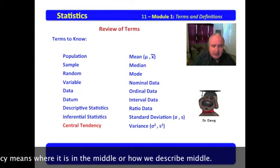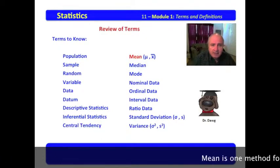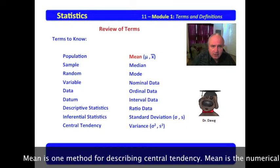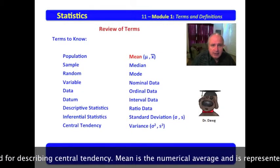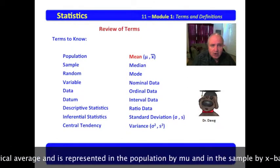Central tendency means that it is where it is in the middle or how we describe middle. Mean is one method for describing central tendency. Mean is the numerical average and is represented in the population by mu and in the sample by x bar.